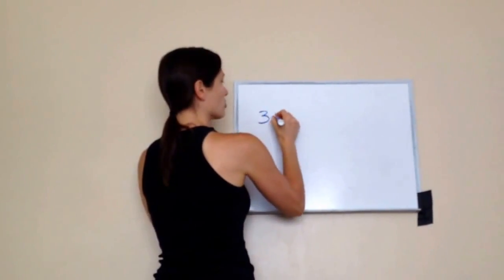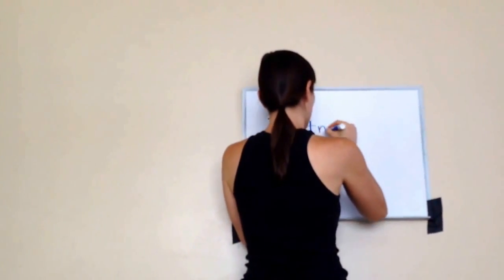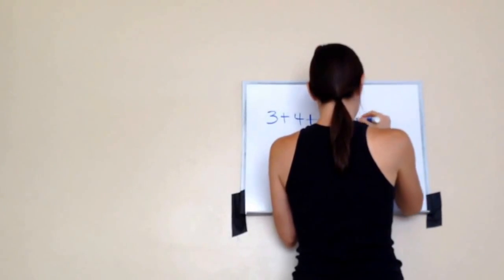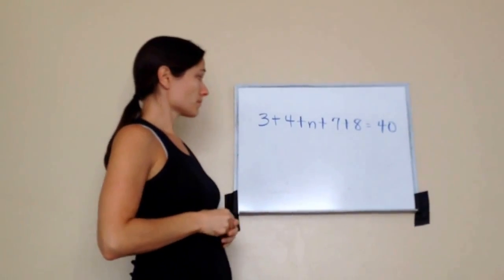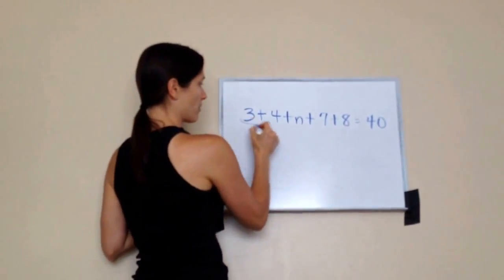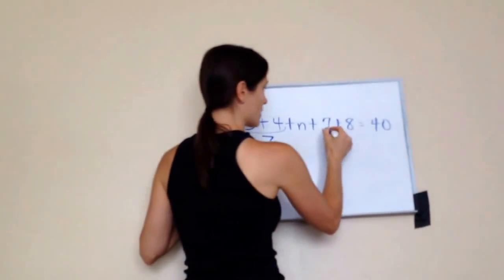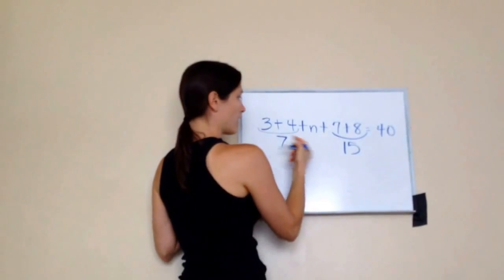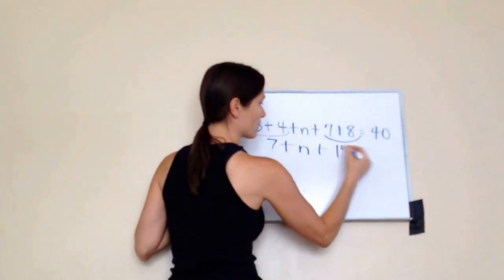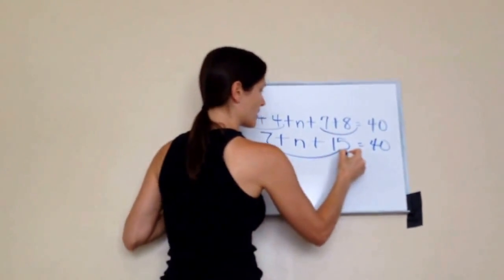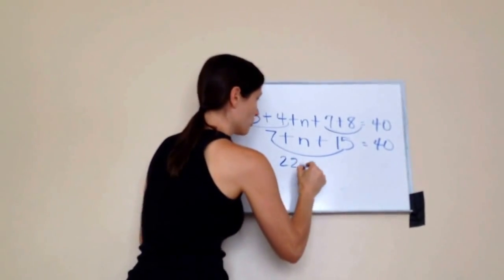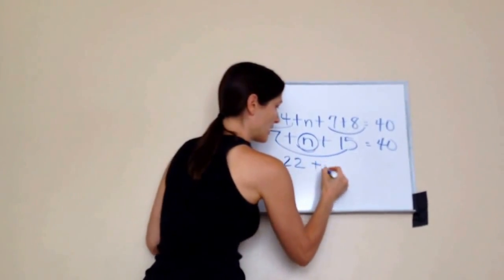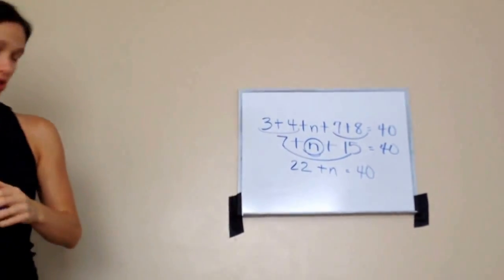You're also going to have problems that are a little bit harder — ones that have multiple add-ins. Isaac says to add the actual numbers first: 3 plus 4 is 7, and 7 plus 8 is 15. So now the problem says 22 plus N equals 40 — we added the 7 and 15 to get 22, and we just have N left. Plus N equals 40.